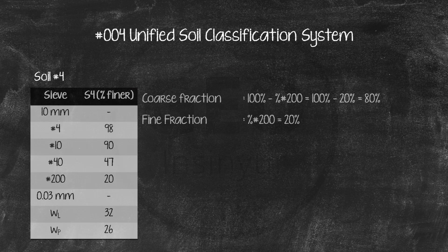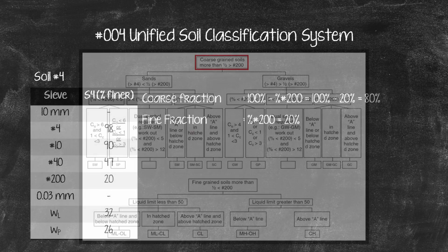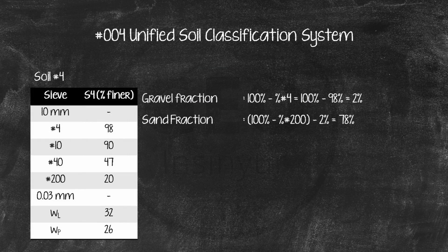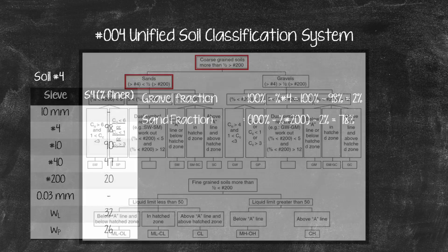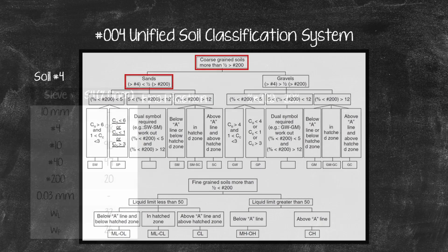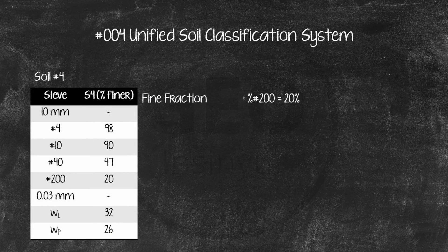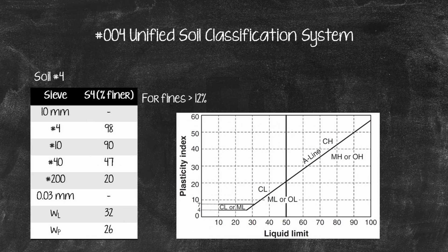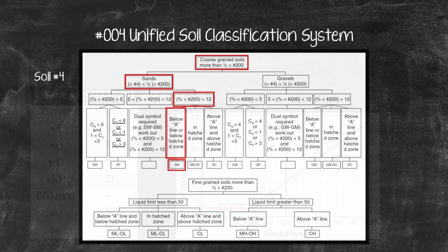Soil No. 4: The coarse fraction is larger than the fine fraction, so it is a coarse-grained soil. The sand fraction is larger than the gravel fractions, so it falls under the sand category. The fine fraction is over 12%, so it is either SM, SM-SC, or SC. Checking the plasticity chart with the plasticity index and liquid limit, Soil No. 4 is classified as SM.